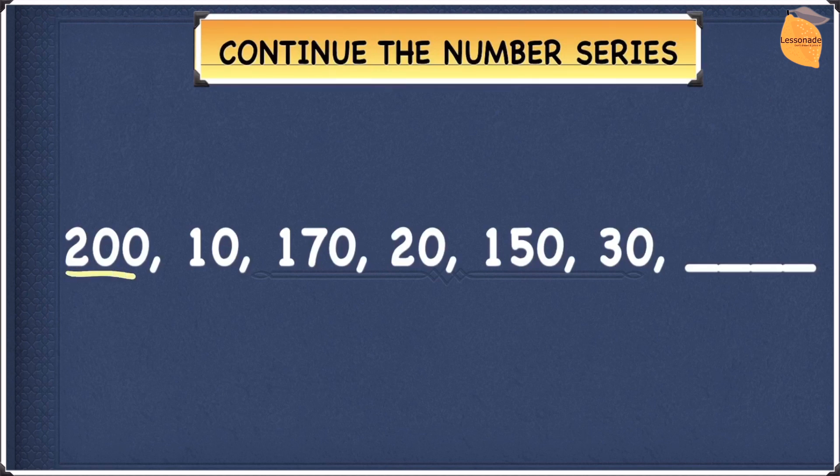The first sequence is going to be 200, 170, and 150. The second sequence is going to be 10, 20, and 30.